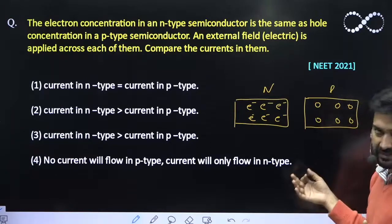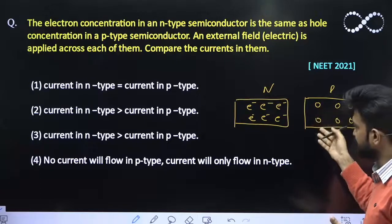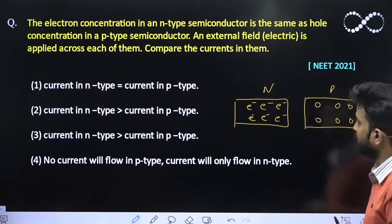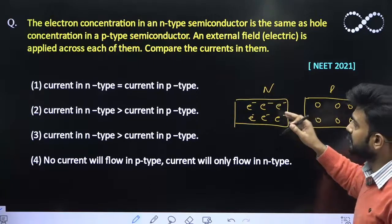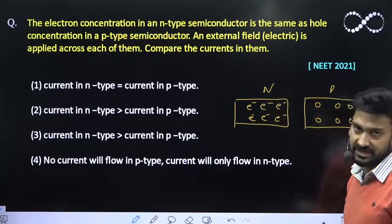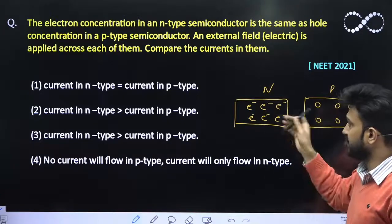And p-type semiconductor must be having equal number of holes. Okay, holes are considered to be a positive charge and electron having negative charge. So that means the majority charge carrier is holes over here which is positive, and the majority charge carrier is electron which is negative charge.